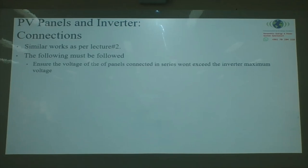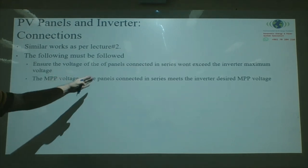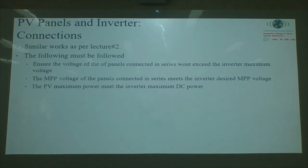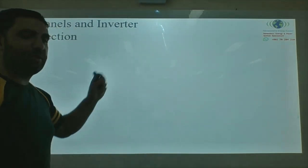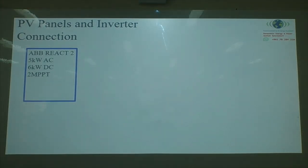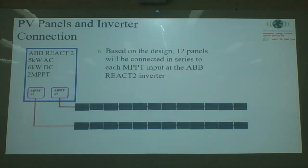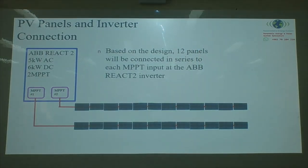For panel connections, as covered in lecture two: the voltage of panels connected in series must not exceed the inverter's maximum voltage; the MPP voltage of panels in series must meet the inverter's desired operating range; the PV maximum power must meet the inverter's maximum DC power; and the PV current must meet the inverter's maximum current. For example, on an ABB React 2 system (5 kW AC, 6 kW DC, dual MPPT), 12 panels would be connected in series to each MPPT input.